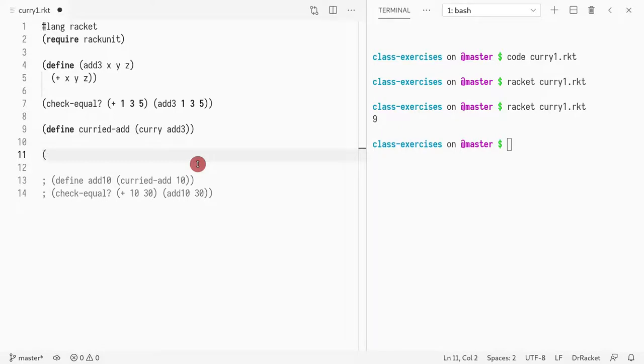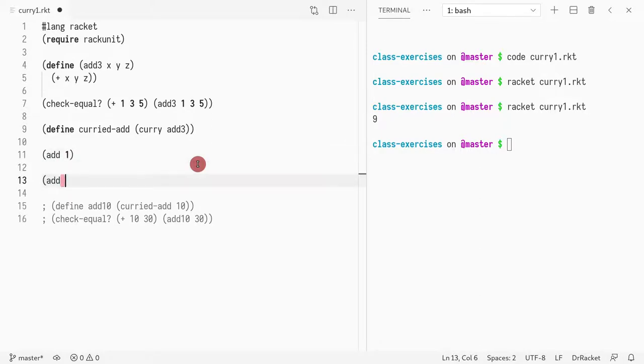So let's say we want to do add one with curried add, and then we want to do curried add, and then we do curried add five.